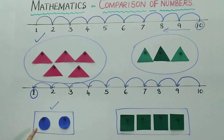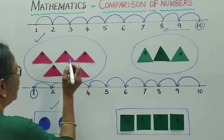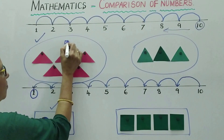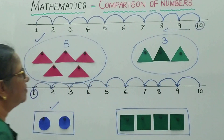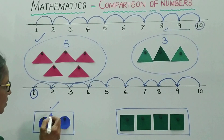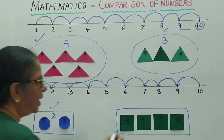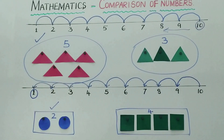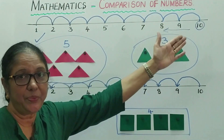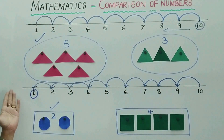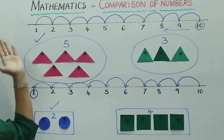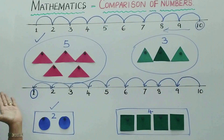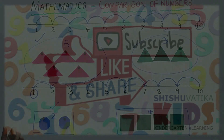Let's write the numbers: this is 5 and this is 3, so 5 is more. This is 2 and this is 4, so 2 is less. This is called comparison of numbers. The value of a number increases as the number goes up — that is increasing order — and decreases as you come down — that is decreasing order.